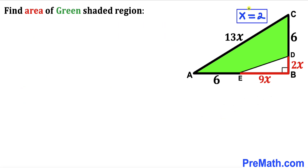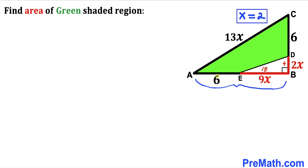With x = 2, segment EB = 9 × 2 = 18, and segment BD = 2 × 2 = 4. Therefore the whole length AB = 6 + 18 = 24, and the whole length BC = 6 + 4 = 10.